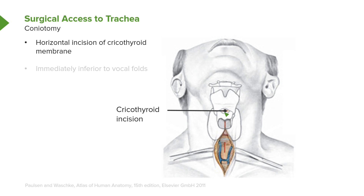Running between these two laryngeal cartilaginous structures is the cricothyroid membrane. One would get to this level surgically and then a horizontal incision would be performed, allowing the patient to be ventilated. This area in a coniotomy is immediately inferior to the vocal cords or folds.